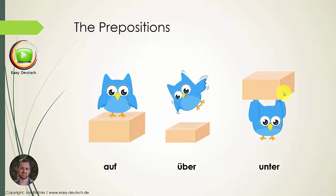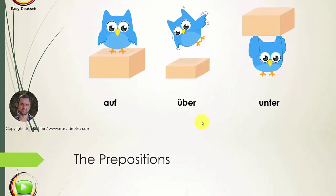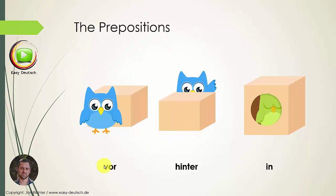Unter means 'under.' Here it doesn't matter if there's a connection or not — both are possible. Vor means 'in front,' so the bird is standing in front of the stone: Der Vogel steht vor dem Stein. Hinter means 'behind': Der Vogel steht hinter dem Stein.